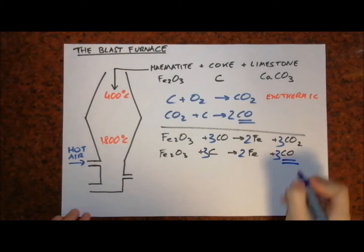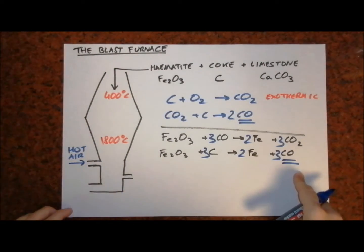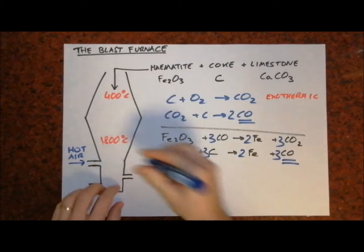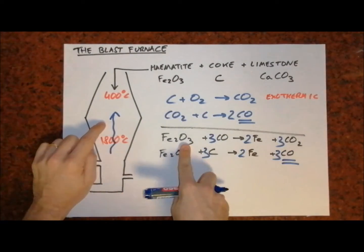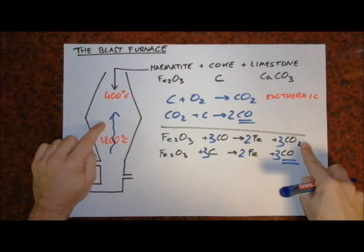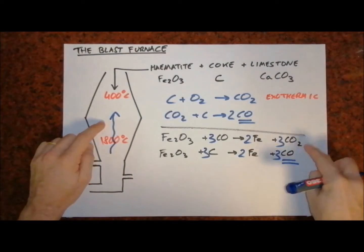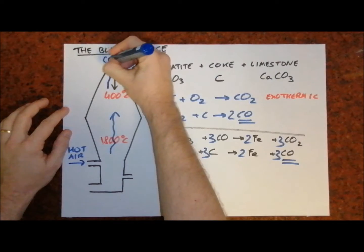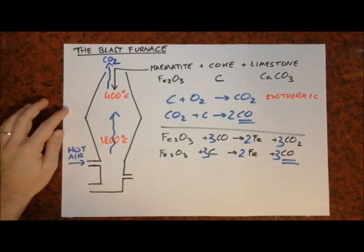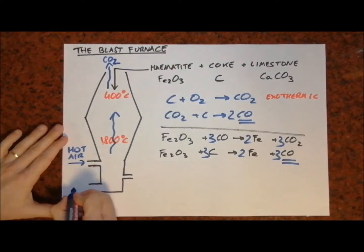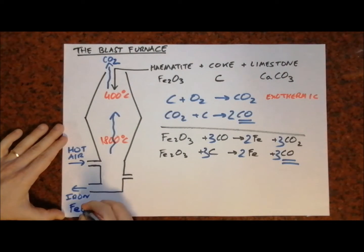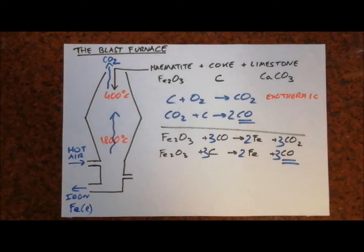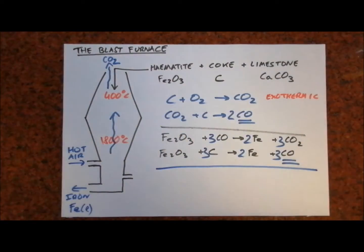Hot gases tend to rise, therefore the carbon monoxide will travel up through the blast furnace and react with more iron oxide to make iron and carbon dioxide. The carbon dioxide is a waste gas and leaves the blast furnace at the top, while the product — molten iron — is tapped off at the bottom. Iron here is in the liquid state.